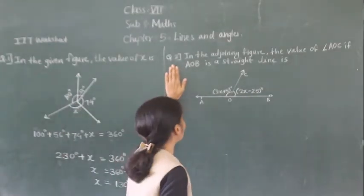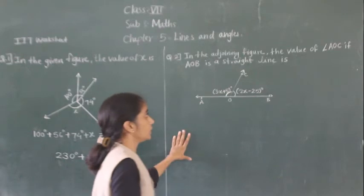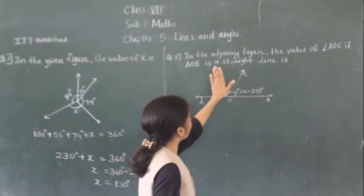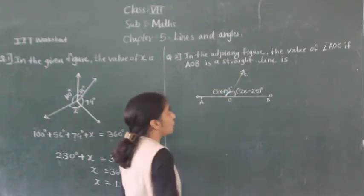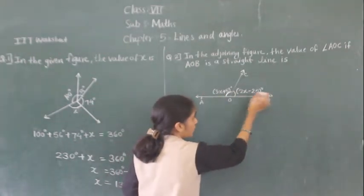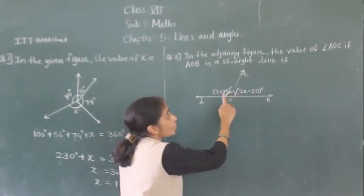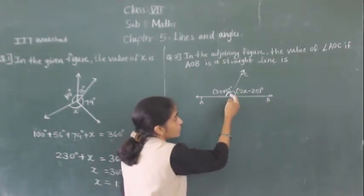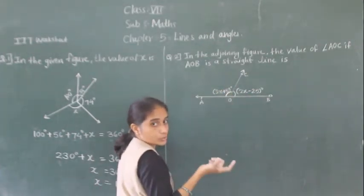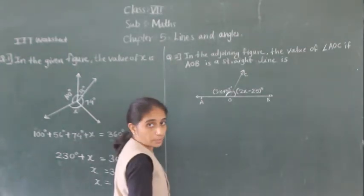Let's move towards question number 2. In the adjoining figure, the value of AOC — if AOB is a straight line. AOB is a straight line. So we have to find the value of AOC. AB is a straight line, so with OC it forms two angles. These are called a linear pair. So these are called a linear pair.